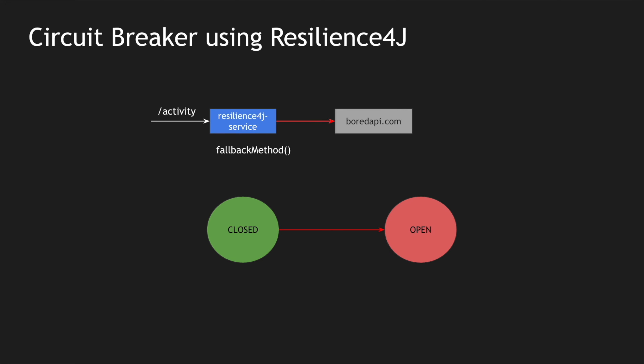It's similar to an on/off switch in electrical appliances. Once a particular threshold time has been breached, the circuit breaker tries to go into a half-open state, where we send requests to the dependent service to see if it is successful. If configured for, say, two or three successful calls to transition from half-open to closed, after the required successful calls the state goes to closed. If there is a failure in half-open it immediately goes back to open.